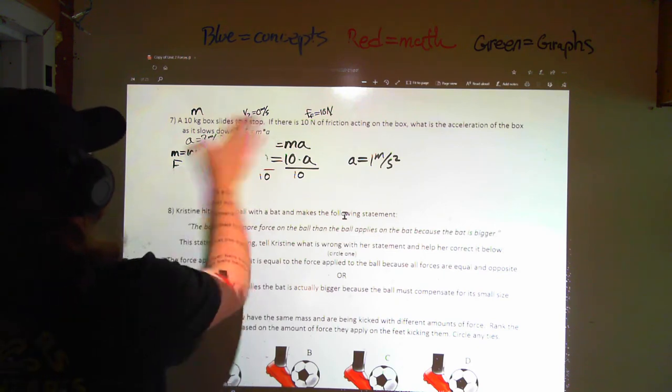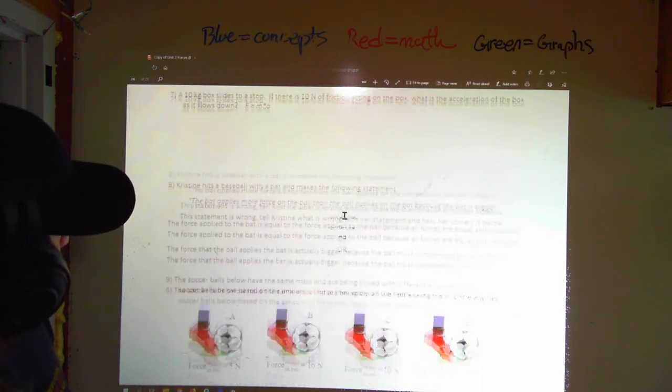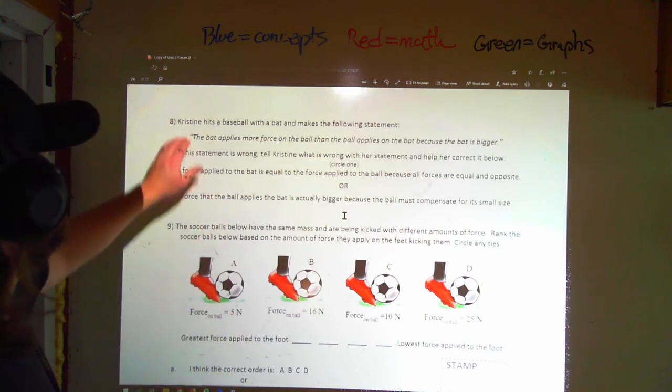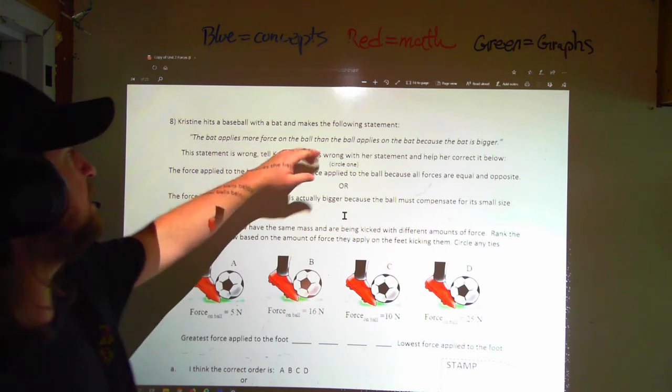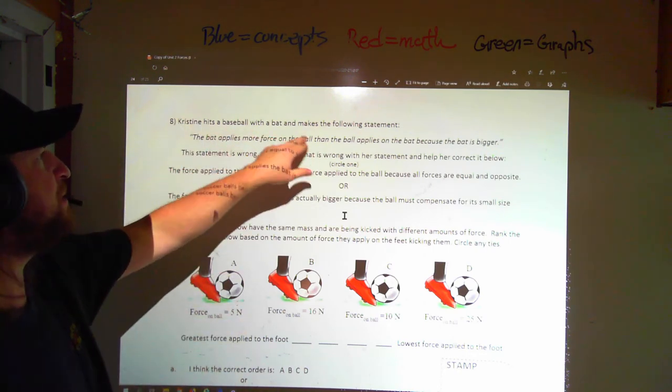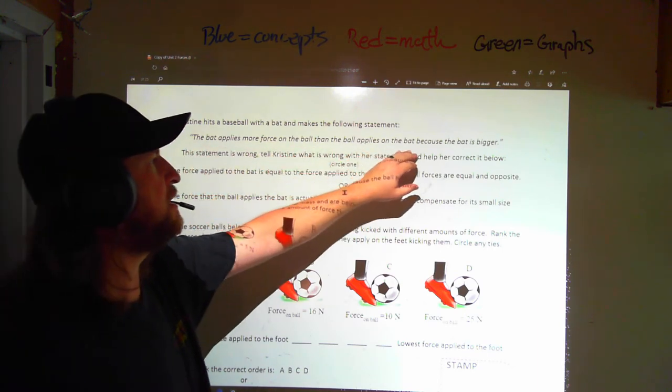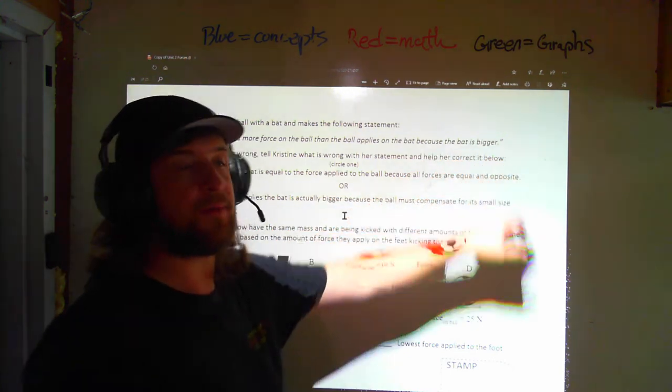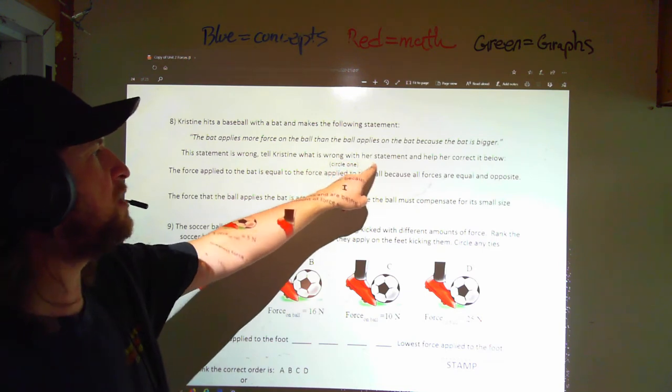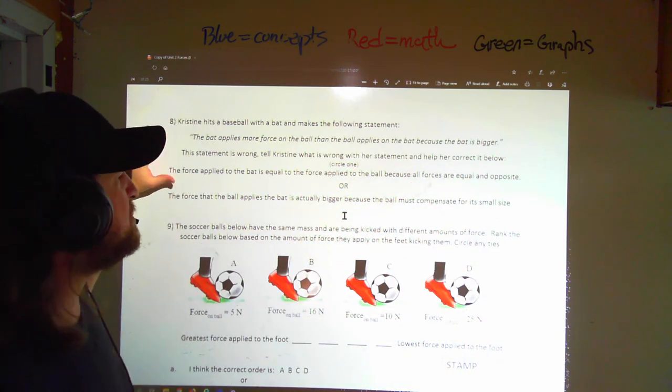All right, let's take a look at the next one. Problem number eight. Okay, so we have Christine here. And Christine is talking about a baseball with a bat, and she was hitting balls earlier. So Christine has hit a baseball with this bat. She says, the bat applies more force on the ball than the ball applies on the bat, because the bat is bigger. Now, there's something wrong with this. And we're going to tell Christine what is wrong with her statement and help her correct it below.